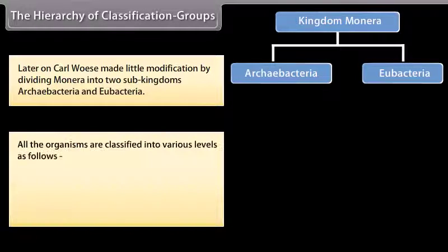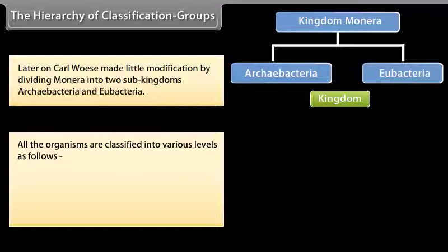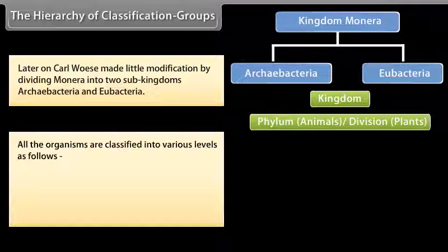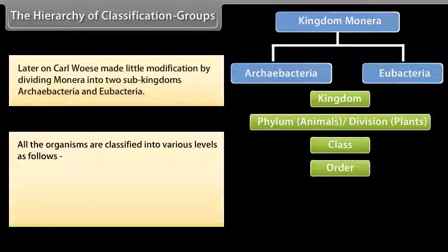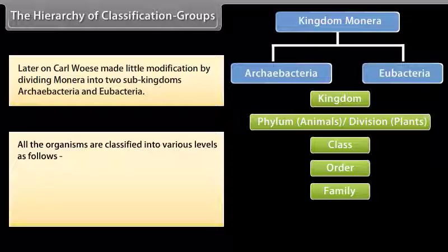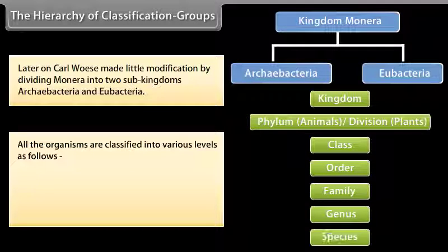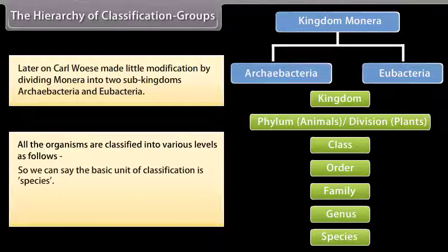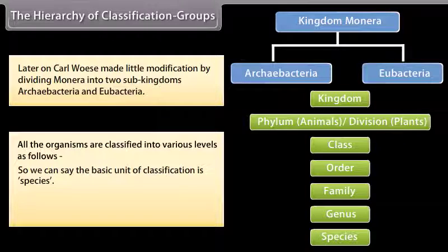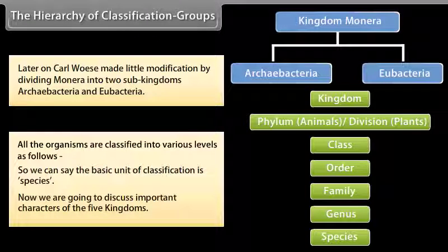All organisms are classified into various levels as follows: Kingdom, Phylum (for animals), Division (for plants), Class, Order, Family, Genus, and Species. So we can say the basic unit of classification is Species. Now, we are going to discuss important characters of the five kingdoms.